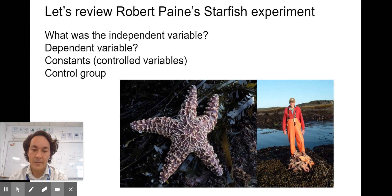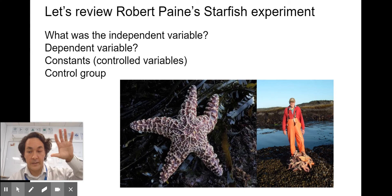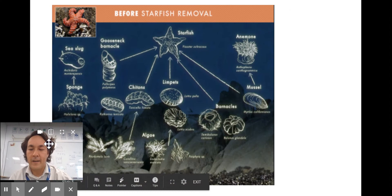What were some things that would have to be controlled in this experiment? Maybe using the same method of counting biodiversity or looking at the same time of day when counting the species. The control group is a group that's left alone and serves as a standard for comparison. The control group here would be tidal pools where the starfish were left in.